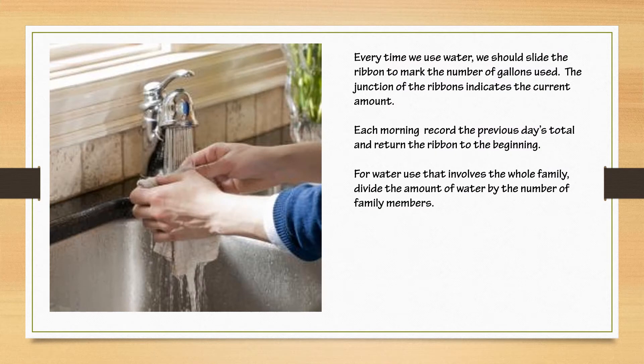So every time you use water during the day you slide the ribbon to mark the number of gallons that you've used. Each morning record the previous day's total and return the ribbon to the beginning. For water that involves the whole family, divide the amount of water by the number of family members.